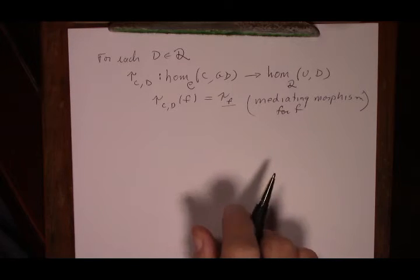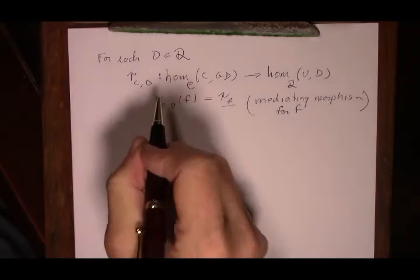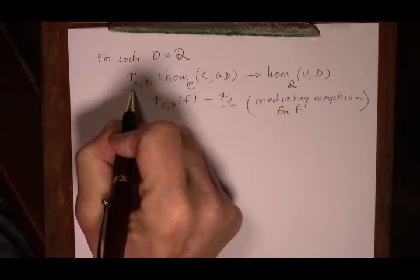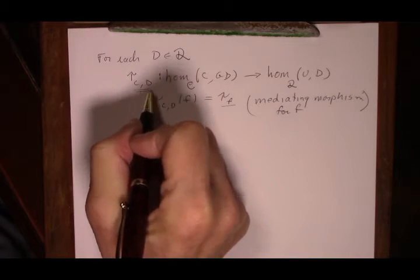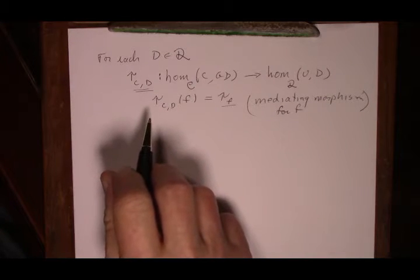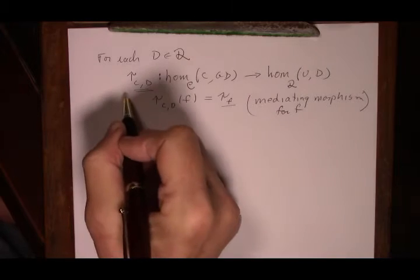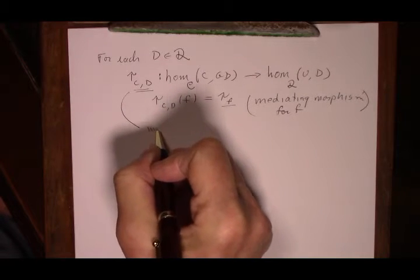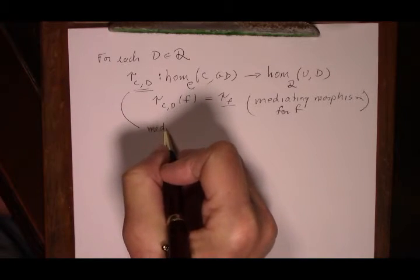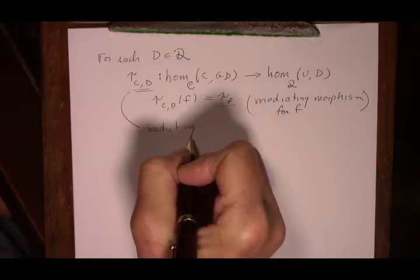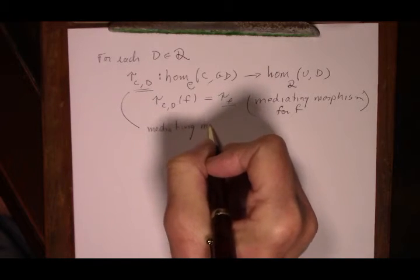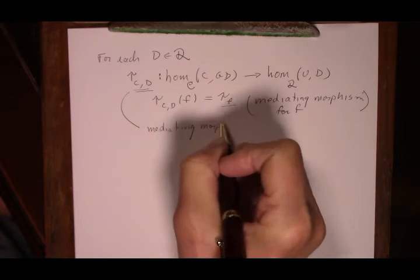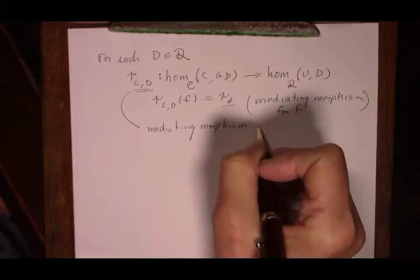The map tau_F has a name — some people call it the mediating morphism for F. Others don't give it a name at all, so not everybody uses that terminology, but I will use it. I think it's useful. Also, this map — which is often not explicitly mentioned — I will call the mediating morphism map.